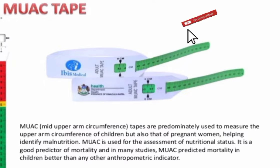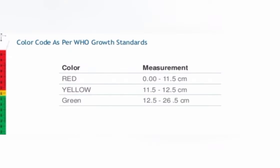Welcome back to the YouTube channel 'Knowledge is Power.' Today I'll discuss the Shakir steps, also known as mid upper arm circumference steps, which are used to measure the upper arm circumference of children to detect malnutrition. They are also used for checking the level of malnutrition in pregnant women, and for the assessment of nutritional status. These steps are a good predictor of mortality, and in many studies they predicted mortality in children better than any other anthropometric indicator.